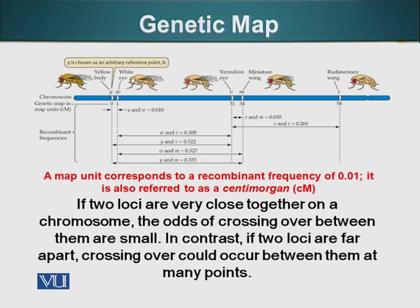So during meiosis, these tetrads, these homologous chromosomes, when they come together, they form these tetrads. How frequently are these genes exchanged between these two homologous chromosomes?